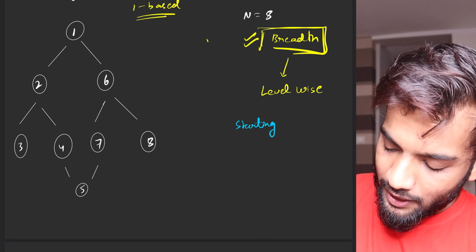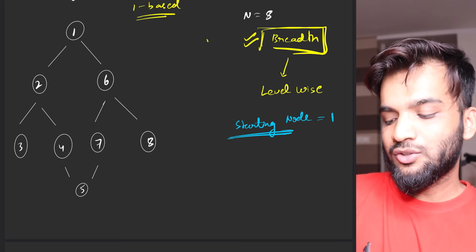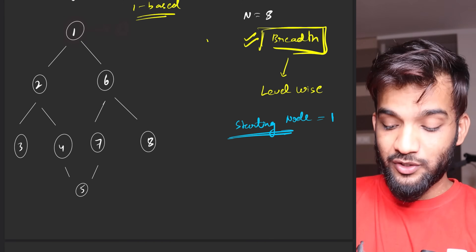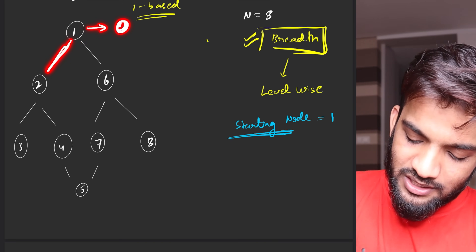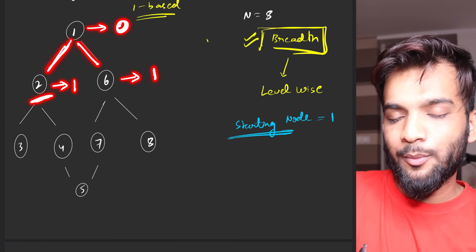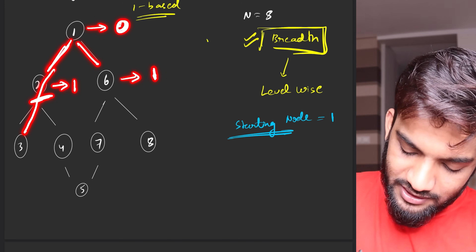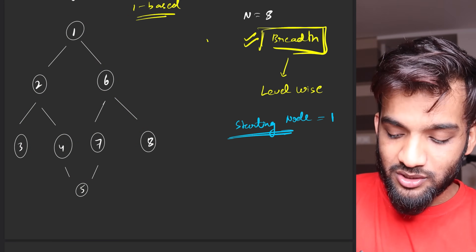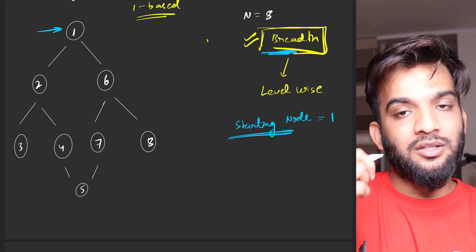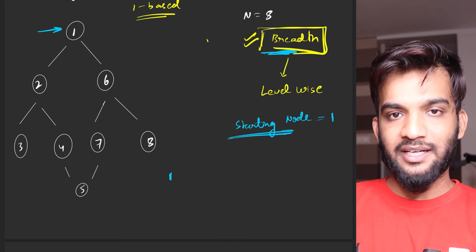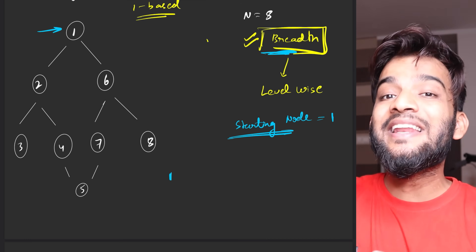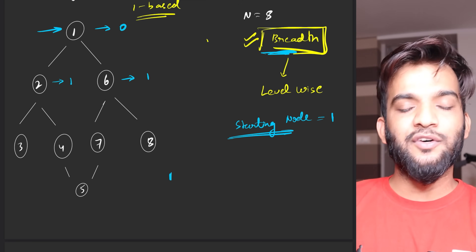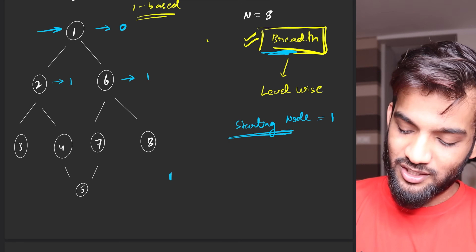Usually you will be given a starting node. Assume the starting node is one — that node is at level zero. The nodes directly connected to it are at a distance of one, so they are called level one. Then the next set of nodes are at level two, and so on. In BFS, you first visit the starting node, then all nodes at the next level.